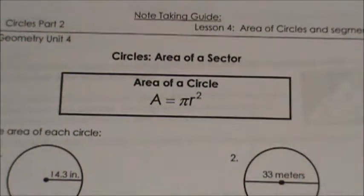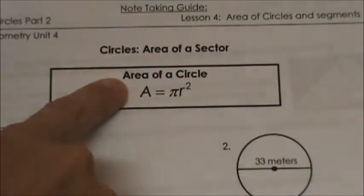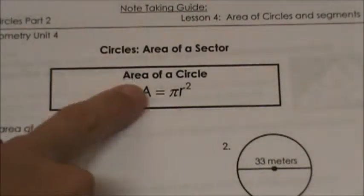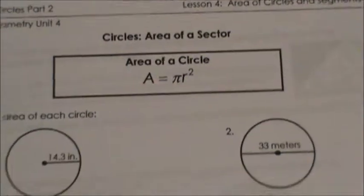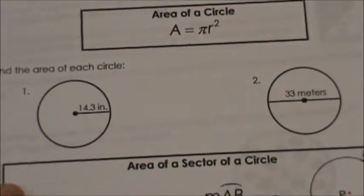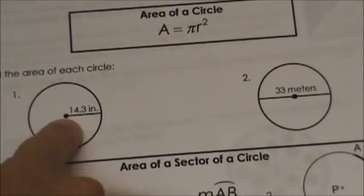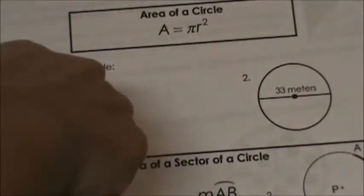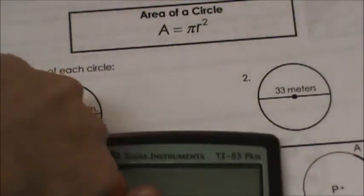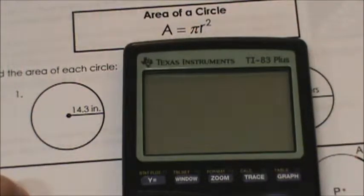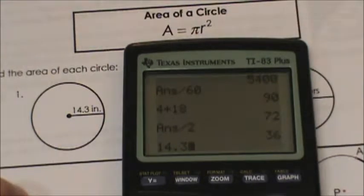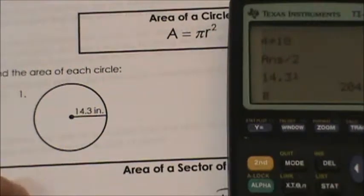Let's first start and build on what you already know, which is the area of a circle. Area of a circle is equal to pi r squared. Let's run through a couple of examples in the note taking guide. We have 14.3 as our radius. So all we need to do is square our radius. I'm going to take my calculator and take 14.3 squared and I get 204.49.